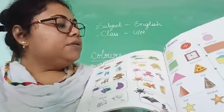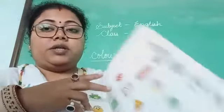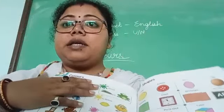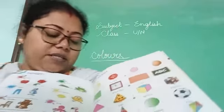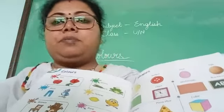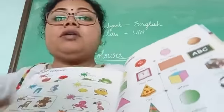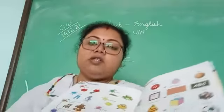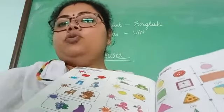Next one is green color. G-R-E-E-N — green color. What is given as an example? It is peas — you have read peas, this is a vegetable. Peas is of green color. Next one — this one is a frog. F-R-O-G — frog. This frog is of green color. One is peas and number two is frog.